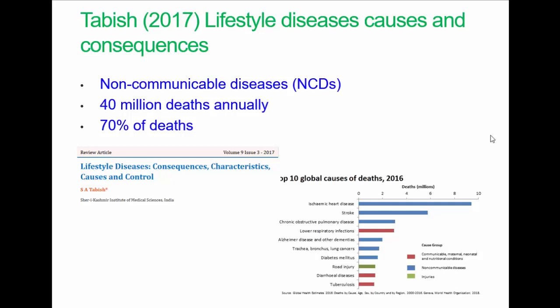Causes of death can be grouped in three categories: communicable — infections and parasitic diseases, and maternal, perinatal and nutritional conditions; non-communicable — chronic diseases; and injuries. Globally, seven of the ten leading causes of death in 2019 were non-communicable diseases, in many cases associated with lifestyle.